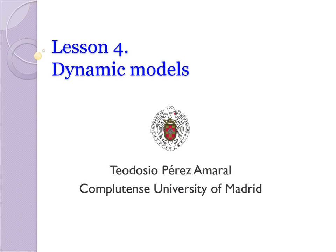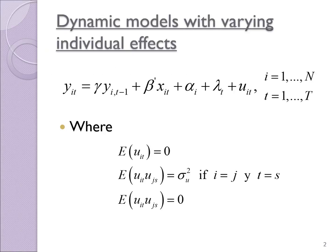We begin with dynamic models. Why dynamic models? We have been dealing with static models — models where everything happens at the same time. We only had sub-indexes t and we did not have sub-indexes like t-1, t-2, or t+7. We didn't have that kind of indexes.